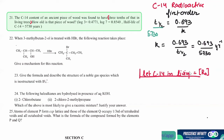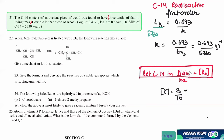We need the concentration of carbon-14 in the living tree. When the tree dies, it gets consumed. So the final concentration R is given as 3/10th of the original concentration R₀. Therefore, R₀ divided by R is equal to 10 divided by 3.